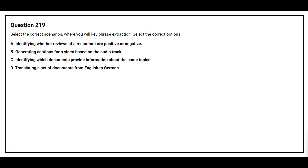Question number 219. Select the correct scenario where you will use key phrase extraction. Option A: Identifying whether reviews of a restaurant are positive or negative. Option B: Generating captions for a video based on the audio track. Option C: Identifying which documents provide information about the same topics. Option D: Translating a set of documents from English to German. The correct answer is Option C: identifying which documents provide information about the same topics.